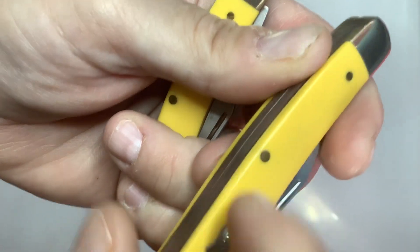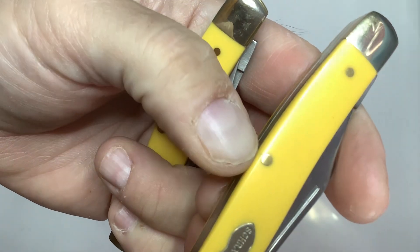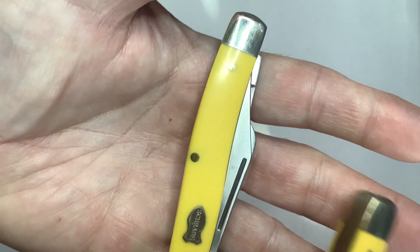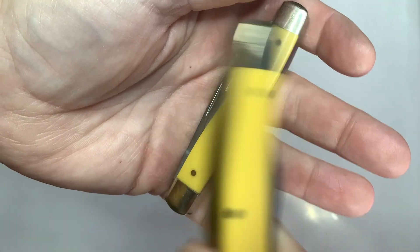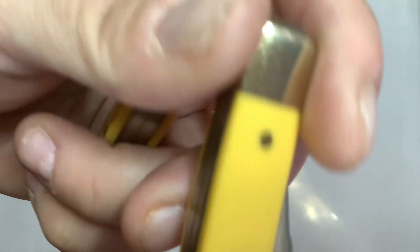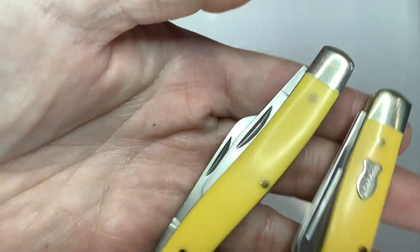Right there, it's got like a little crack in the Derlin or whatever that stuff is called. This one doesn't, so this one's in better condition I guess. And now that one does have one right there too. I guess they both do—one's on the show side, one's on the back side.